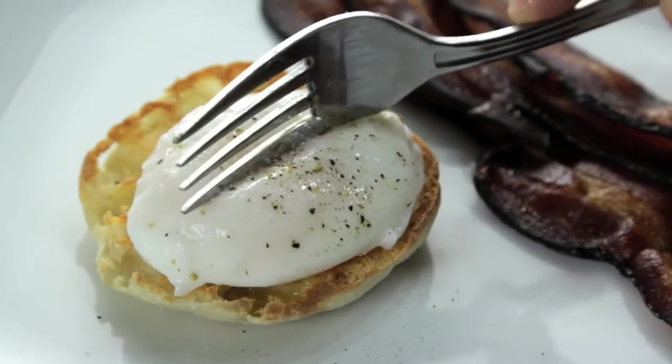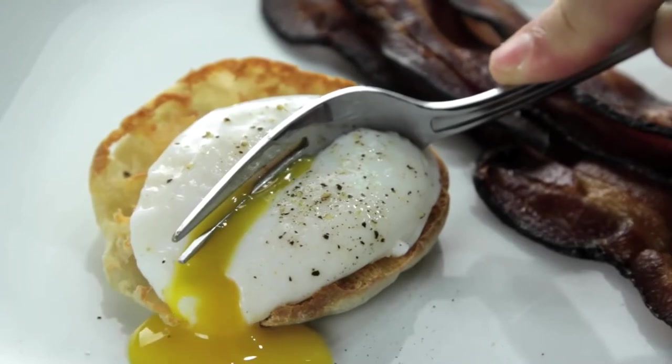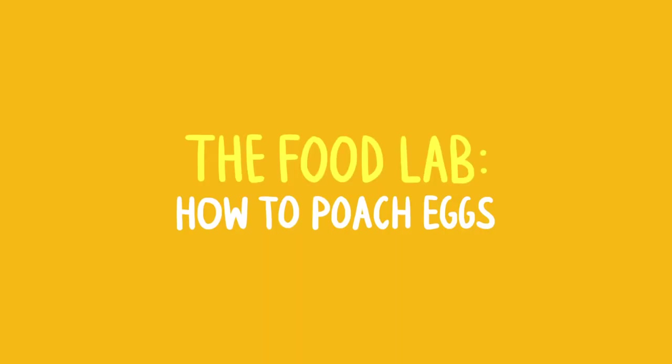The perfect poached egg. Tender whites around a warm liquid yolk that oozes out like gold when you cut into it. They're an essential part of Eggs Benedict. They can turn any salad into a meal or any vegetable into brunch.